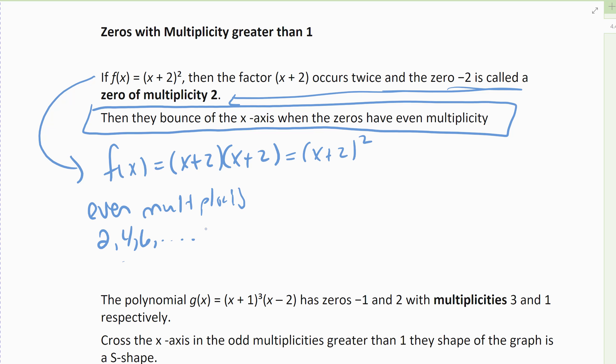What happens graphically is it bounces off. So this particular graph would have a zero at negative 2. But instead of crossing at negative 2, what happens is it bounces off. This is the shape if you graphed f(x) = (x + 2)².